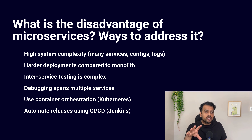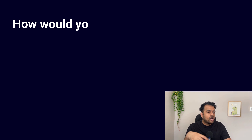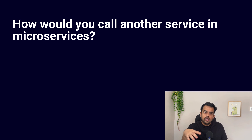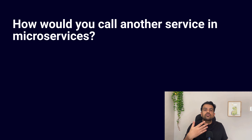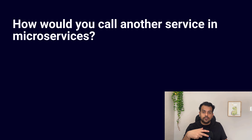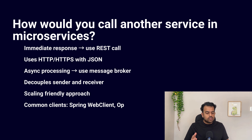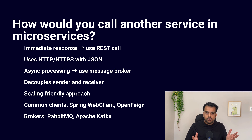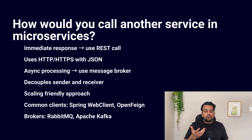Our next question is: how would you call another service in microservice architecture? This is a very common question, especially for beginners. In microservices, services are separate — they need to talk to each other to complete a business flow. There are two very common ways microservices can talk to each other. The first way is HTTP REST calls, where one service calls another over HTTP or HTTPS using JSON. For example, an order service can call a payment service through a REST API by sending a POST request with payment details in JSON.